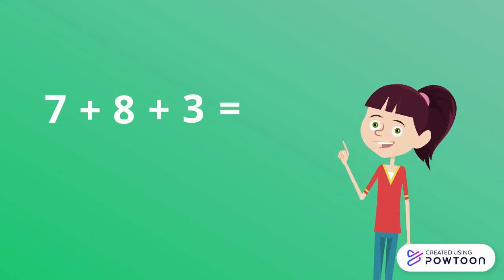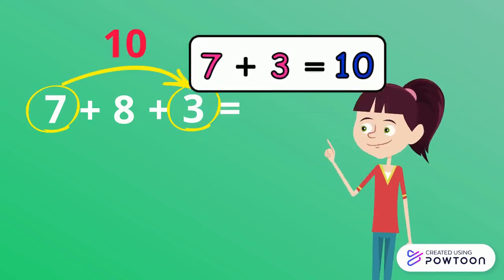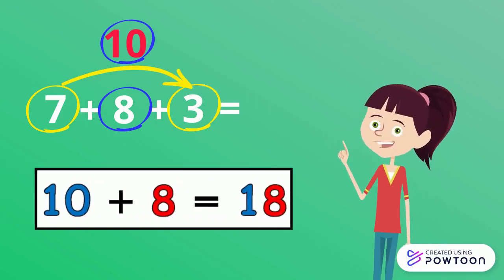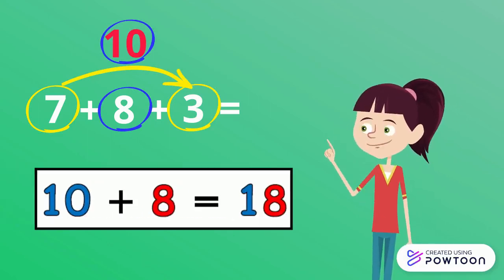7 plus 8 plus 3. 7 plus 3 equals 10. Now we're going to add 10 plus 8 equals 18. So, 7 plus 8 plus 3 equals 18.